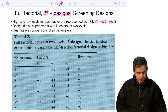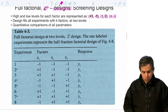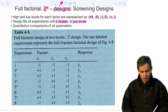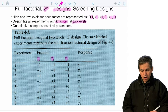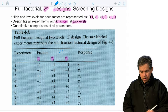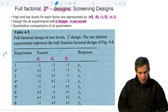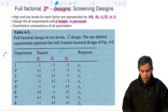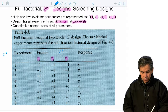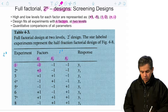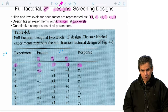Here is an example in which we compare k factors at two levels, where each factor is coded as x1, x2, or x3. This is a 2 to the third design. In this table we are coding the levels as minus 1 or plus 1. The first experiment has all factors at the lowest level, minus 1, and the corresponding response is represented as y1.